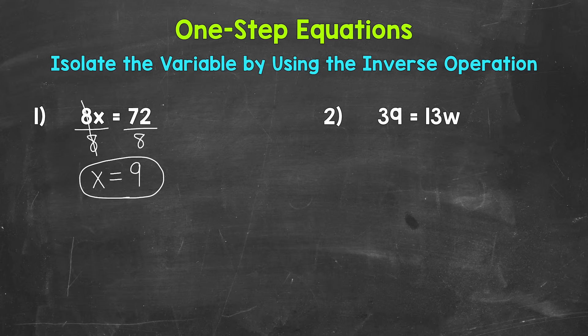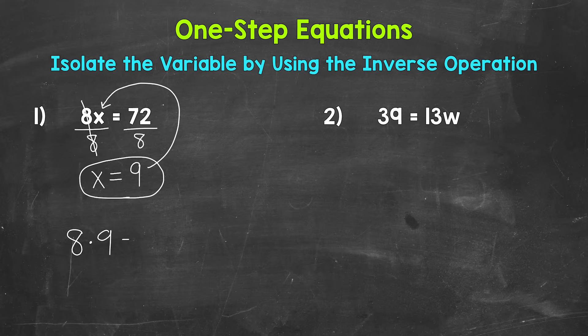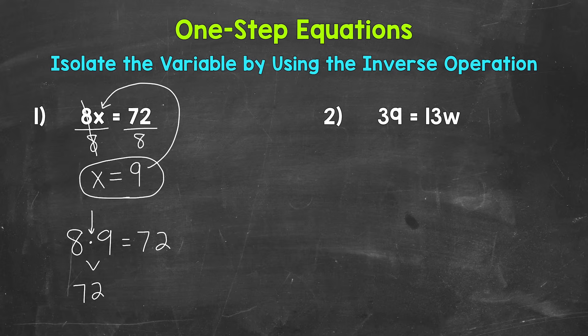We can always check a solution by plugging it into the original equation. Let's plug 9 in for x and see if this works. We have 8 times 9 equals 72. 8 times 9 does equal 72, so we have the correct solution: x equals 9. One thing to mention about plugging that 9 back into the original equation — make sure to use something to represent multiplication. I used a dot. Putting the 9 right next to the 8 would look like 89. Two numbers together does not represent multiplication, but a number next to a variable does.